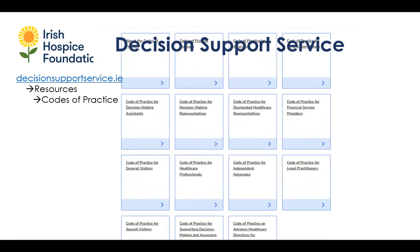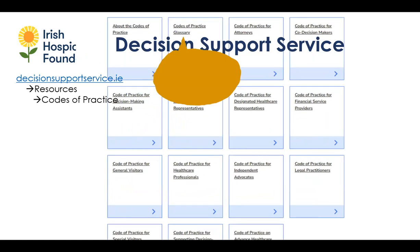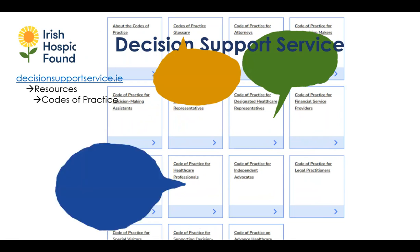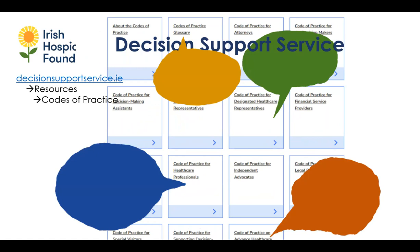The sources we're pulling from for today's session include the glossary — there's a lot of jargon in these codes — the Code of Practice for Designated Health Care Representatives, the Code of Practice for Health Care Professionals, and the Code of Practice for Advanced Health Care Directives for Health Care Professionals. They're very easy to read and really well written, so hopefully they provide support for your work.